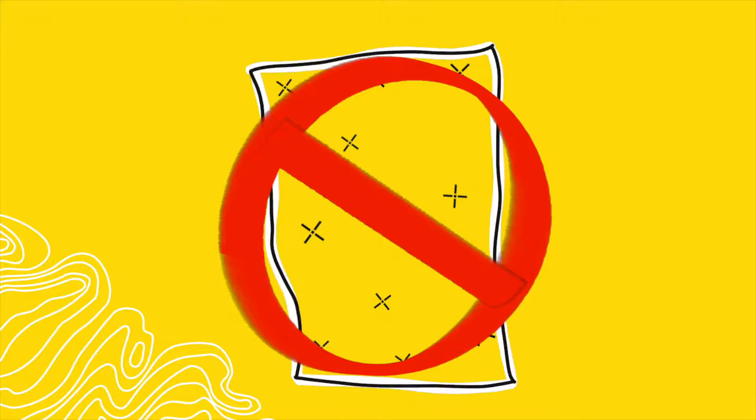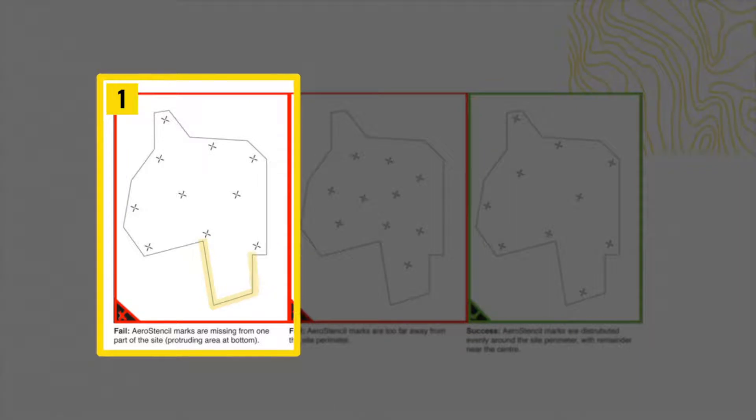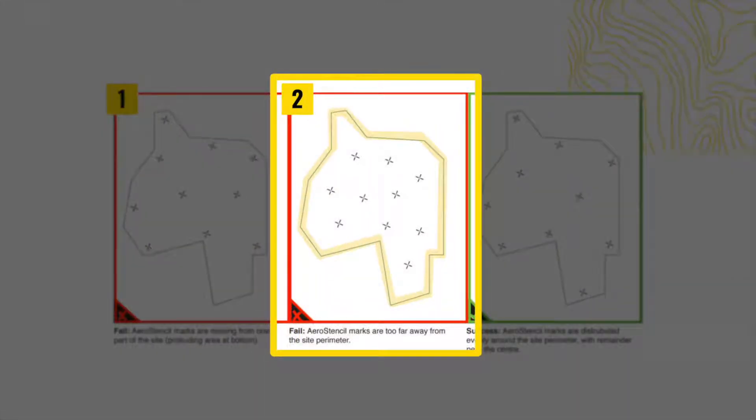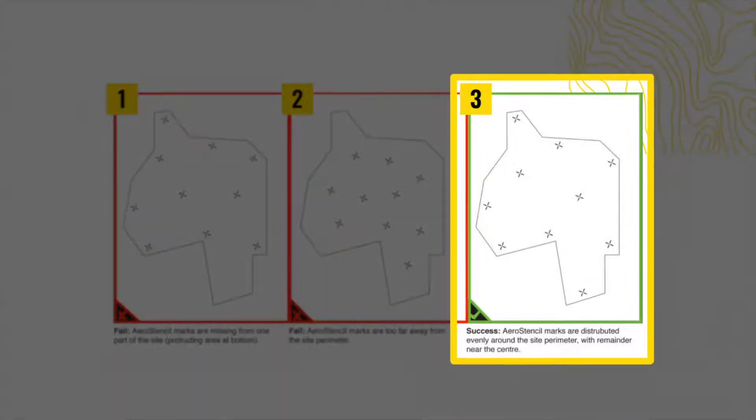We like to use the analogy of your site like a tarp on a windy day. In order to keep the tarp from blowing away, we need stakes — which represent ground control — to keep the tarp in place. You should start by placing stakes on the corners of the tarp, but just like a tarp, if there are no stakes in the center the wind will continue to blow it around. Similarly, it's important to ensure that you have ground control coverage on the perimeter and corners of your site, along with coverage towards the center. Take a look at these examples of ideal placement. In the first example, ground control is missing from the protruding area on the bottom, which is not ideal. In the second example, the ground control isn't adequately covering the perimeter. The third example displays ideal placement — the perimeter is adequately covered along with the protruding areas and the middle of the site.